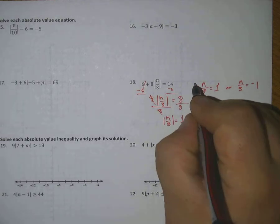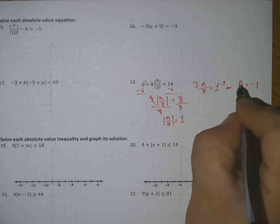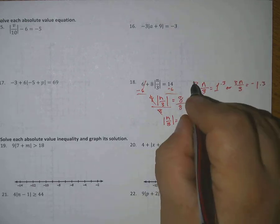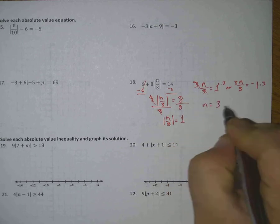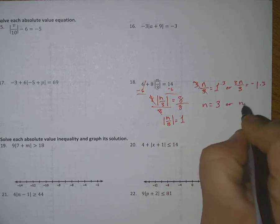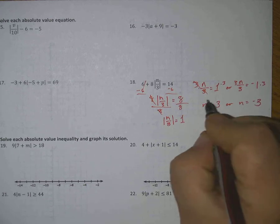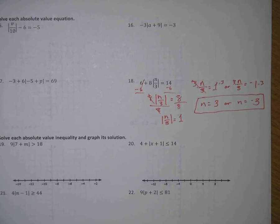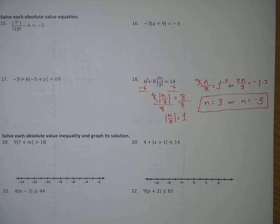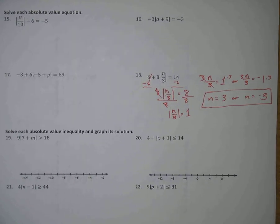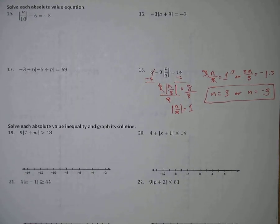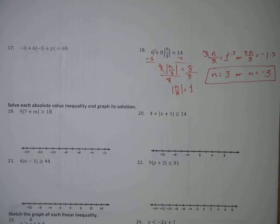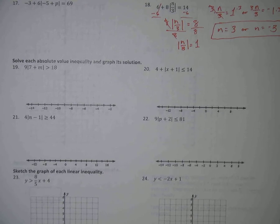From there, just solve each equation by multiplying by 3 on both sides for both equations: n equals 3, or n equals negative 3. Those are my two answers. Make sure you're boxing or circling your answers so I don't have to look all over the place to find your answer. I am interested in seeing the work, but I want to know the answer is right first.